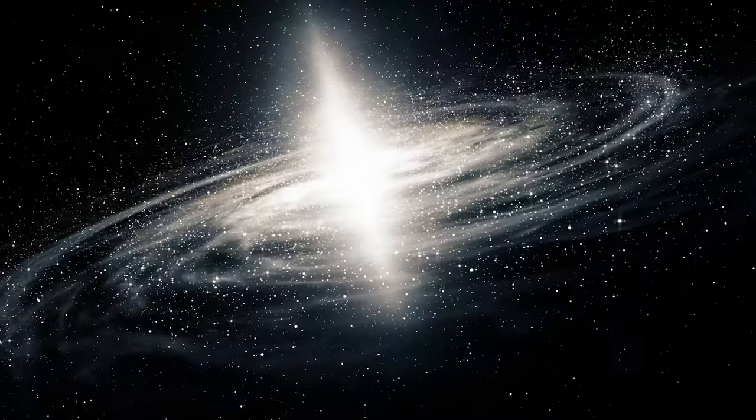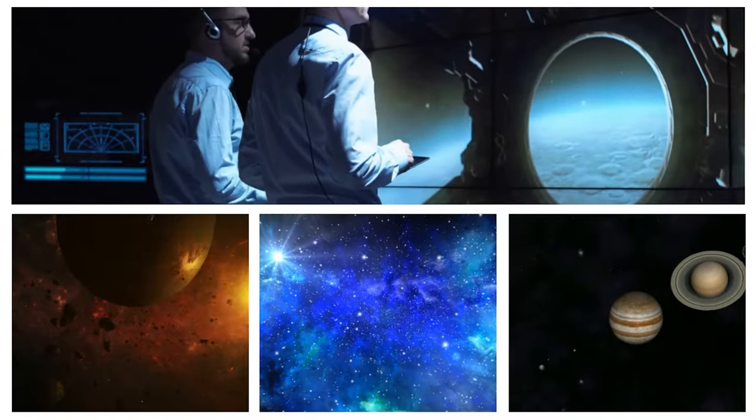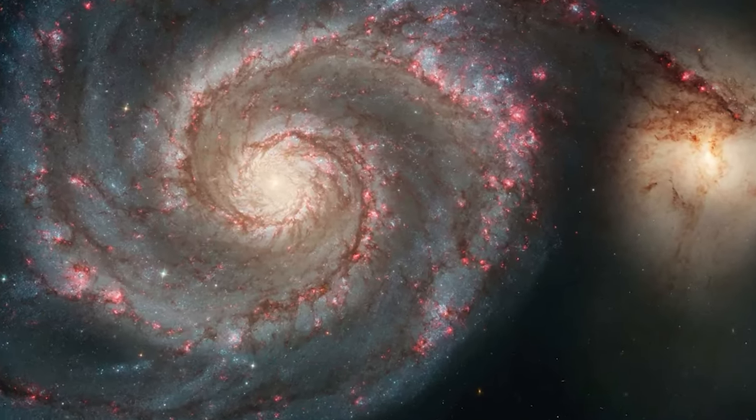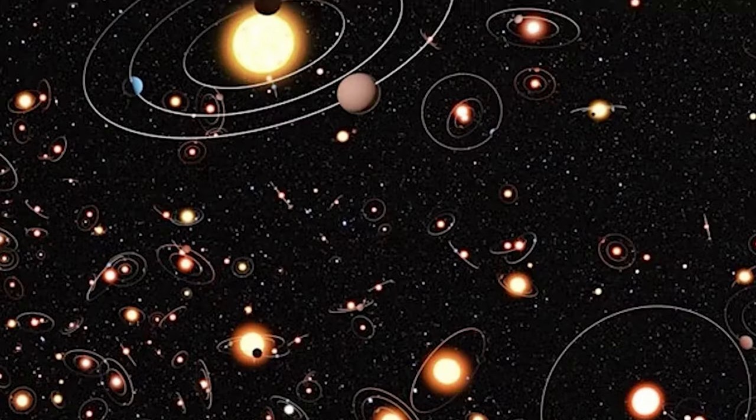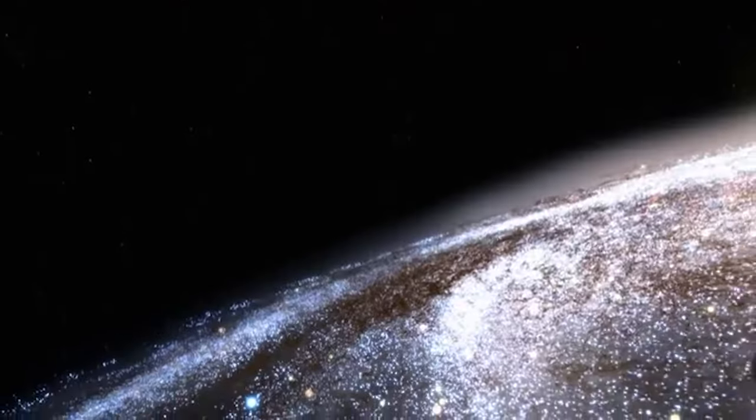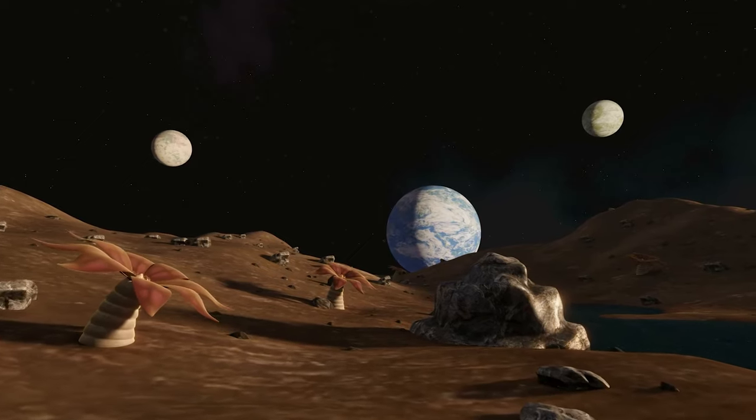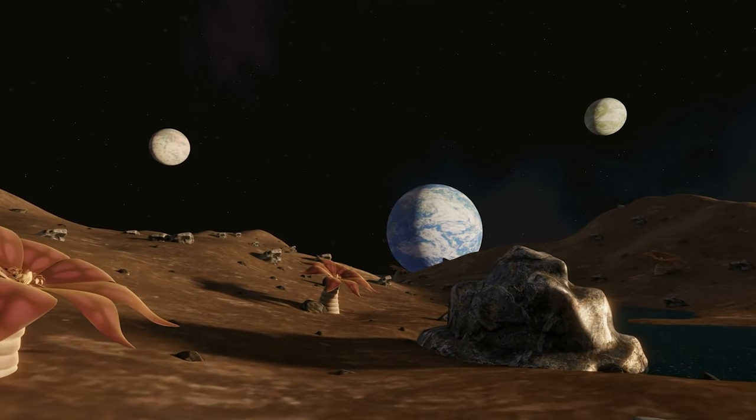Exoplanets are abundant in the universe. From observations, we've learned that there are more planets than stars. Just within our galaxy, the Milky Way, there are billions of planetary systems, each with its own set of exoplanets. And beyond our galaxy, there are countless more exoplanets. In short, exoplanets are abundant throughout the cosmos.